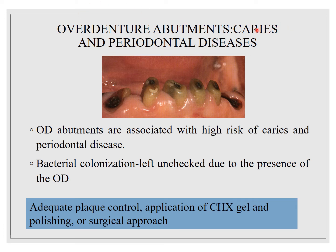Coming to overdenture abutments — caries and periodontal diseases. Overdenture abutments are associated with a high risk of caries and periodontal diseases due to unchecked bacterial colonization. It is always advisable to have root canal treatment performed on overdenture abutments, with or without a coping, to protect them. Treatment includes adequate plaque control, application of chlorhexidine gel and polishing, and surgical approaches if required.